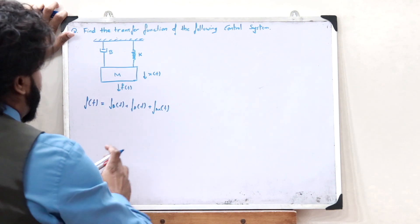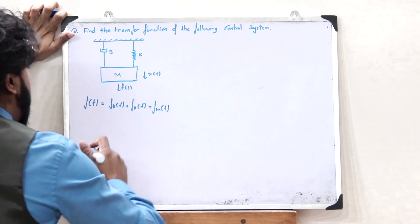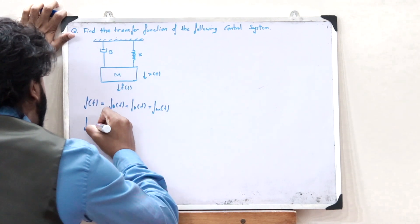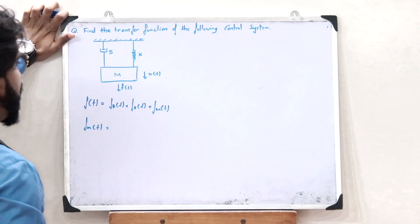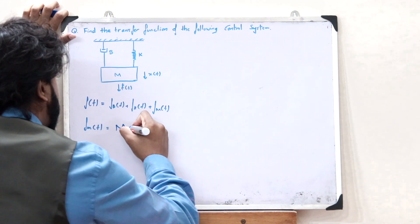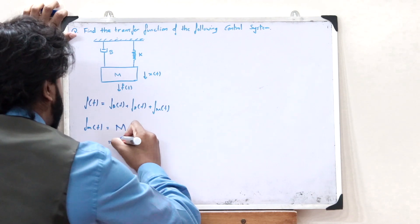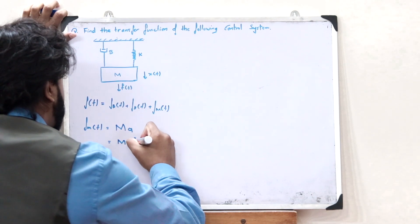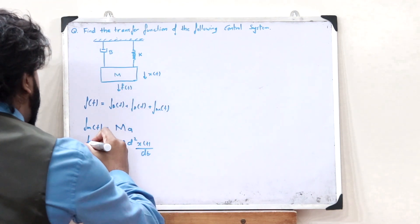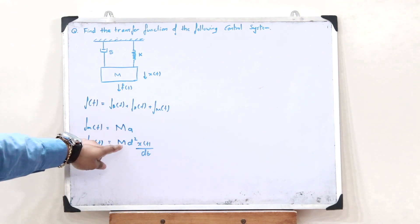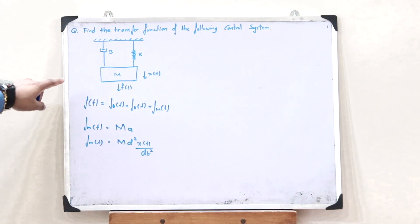First, let us take FM of T — that is the restoring force developed in mass M. FM of T is equal to the mass M multiplied by the acceleration A. The acceleration is given as the second-order derivative of the displacement. So therefore, FM of T is given as M into d²X(T)/dt².